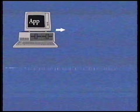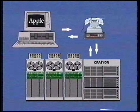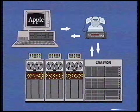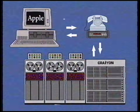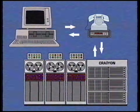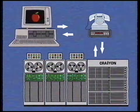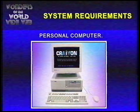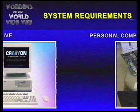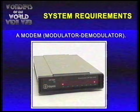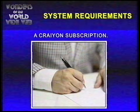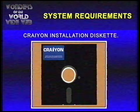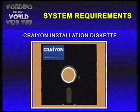After installing Crayon, you can communicate with the Crayon supercomputer via the telephone line. The computer will analyze your text, create an image, and send it to your computer. For Crayon, you'll need a PC, a hard disk drive, a modem, a Crayon subscription, and the Crayon installation diskette.